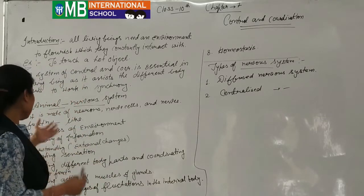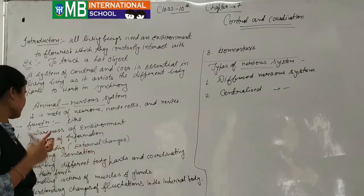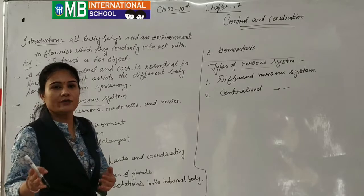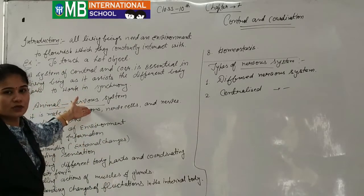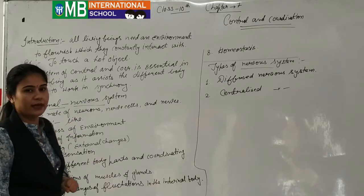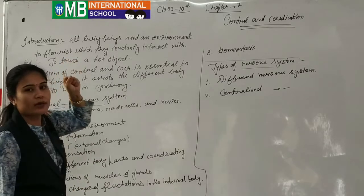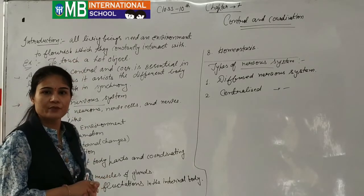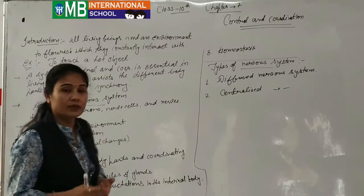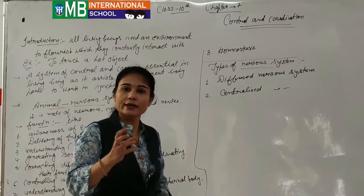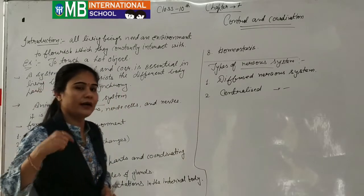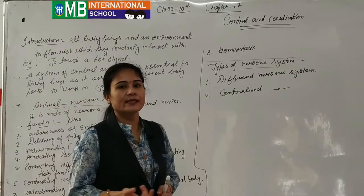Let's look at the functions of the animal nervous system. The first function is awareness of environment — what is exactly happening in our environment, which is informed by the nervous system. The second function is delivery of information. When we touch a hot object, we remove our hand — that hotness information is delivered directly to the brain by sensory neurons and motor neurons.